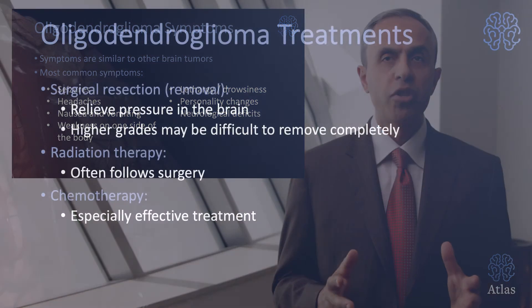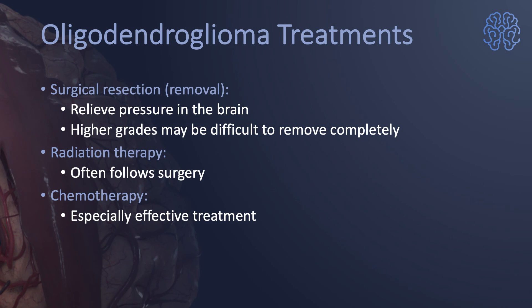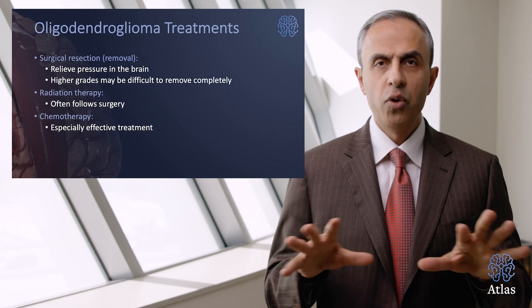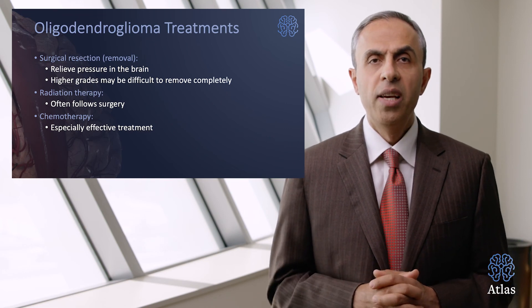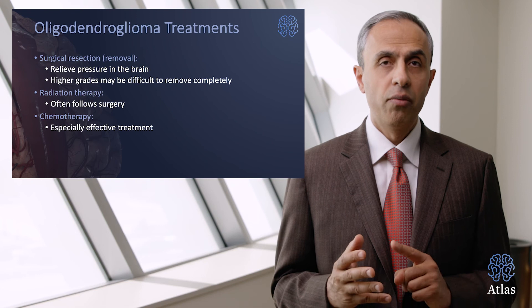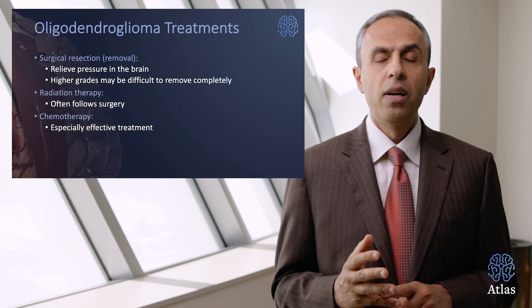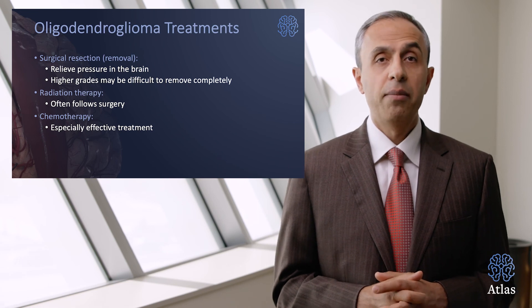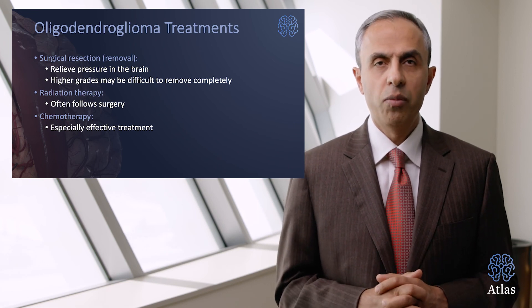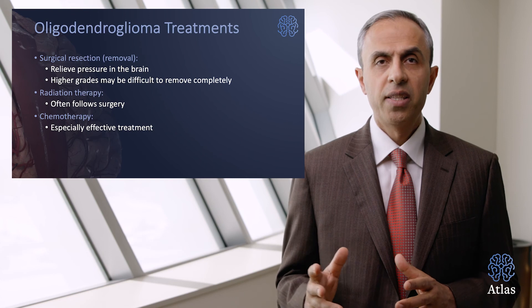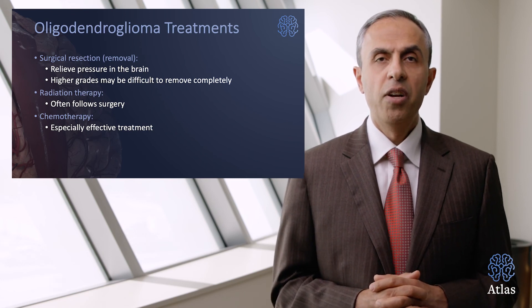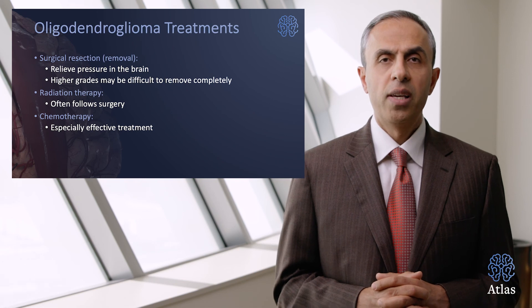What are the treatment options for oligodendrogliomas? First, surgical resection. Higher-grade tumors may be difficult to remove because of finger-like projections into the brain. Radiation often follows surgery. Chemotherapy can be quite effective in these tumors — unlike some of their counterparts, oligodendrogliomas can be very responsive to chemotherapy.